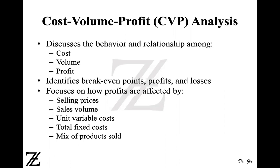It focuses on how profits are affected if you increase or decrease the selling price, how profits are affected when the sales volume goes up or down, if you get a quantity discount and reduce your unit variable cost, or when raw material becomes more expensive because of shortage and the variable cost per unit goes up. Also what happens if the total fixed cost goes up or down, or if you are dealing with multiple products, what happens if the mix of the product changes?